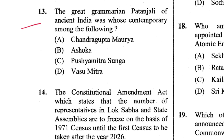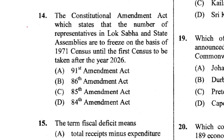Question 13: The great grammarian Patanjali of ancient India was whose contemporary among the following? C is the answer — not Vasumitra.